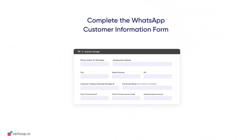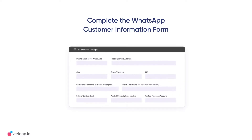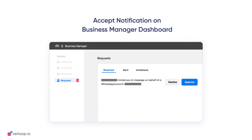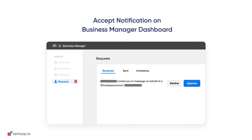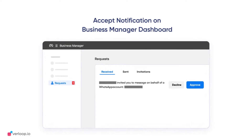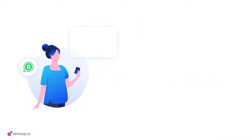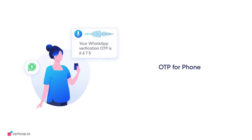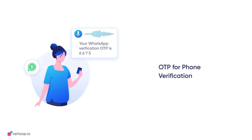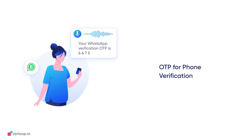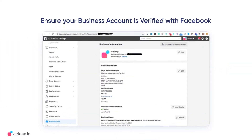To kick-start the onboarding process, you will need to fill out an application form. Once the form has been completed and submitted, you will receive an email to approve the dual notification request sent to your Facebook Business Manager dashboard. Next, you need to confirm ownership of the WhatsApp phone number through OTP phone number verification. This step confirms your ownership of the phone number, and you are now officially live with your WhatsApp Business account.